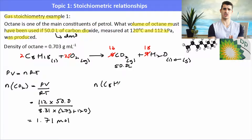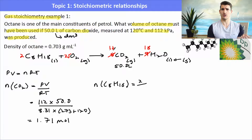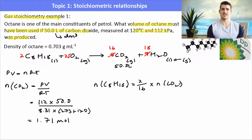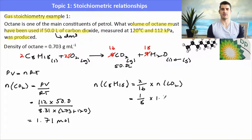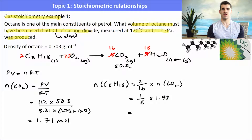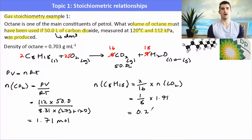Now use the stoichiometric ratio between CO2 and octane to find moles of octane. The ratio is 2 (octane) over 16 (CO2), which simplifies to one eighth. So moles of octane = (1/8) × 1.71 = 0.214 moles.